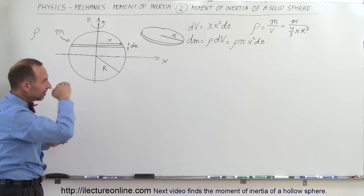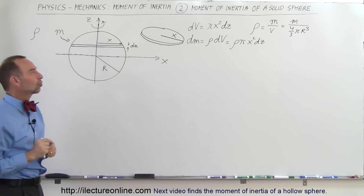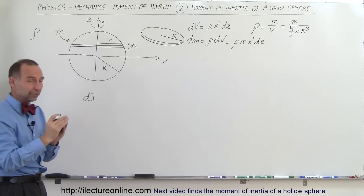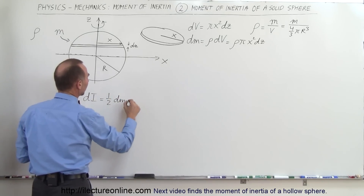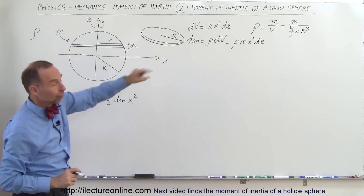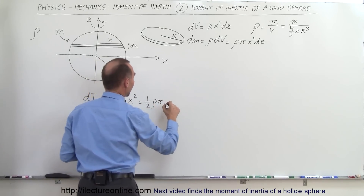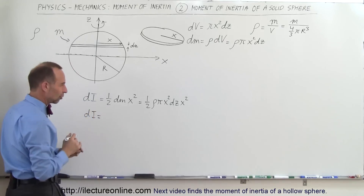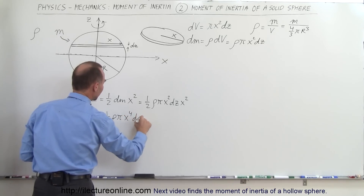The slice is like a disc rotating about its axis, so the moment of inertia of a rotating disc is one-half times the mass times the radius squared. That means DI equals one-half times DM times x². Substituting DM, we get DI equals one-half times rho times pi times x⁴ times DZ.